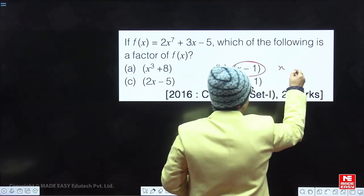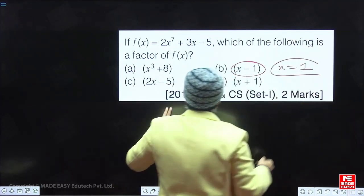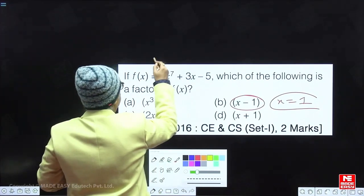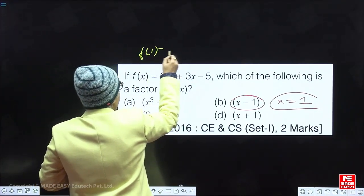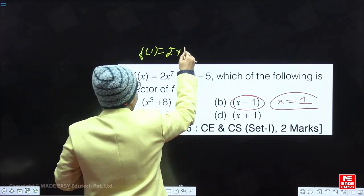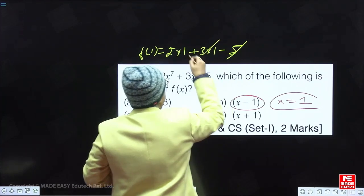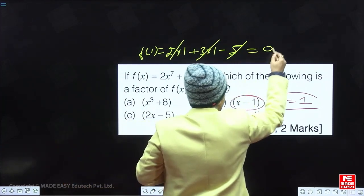If we put x minus 1 is equal to 0, or x equal to 1 in this equation, as soon as I put here x equal to 1 in this equation, f(1) will come out to be 2 into 1 power 7, plus 3 into 1, minus 5. And this 5 and 5 will become 0. Hence,